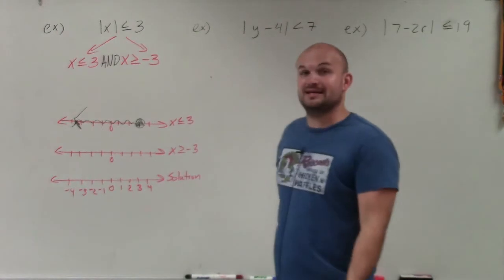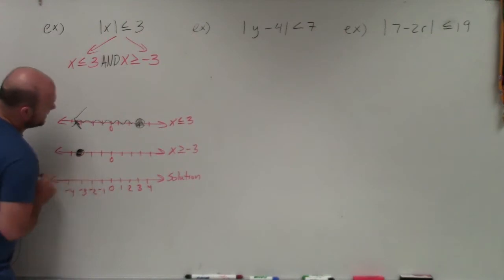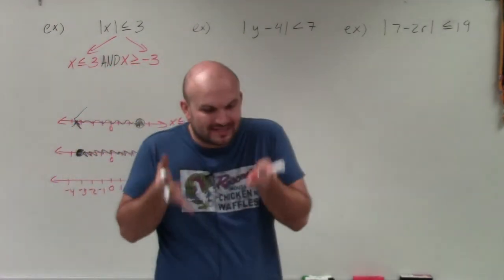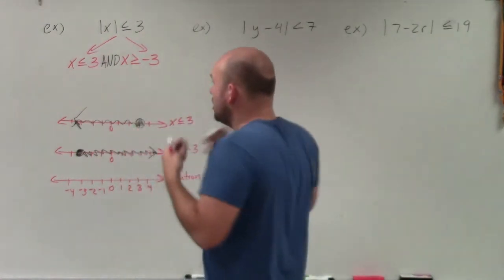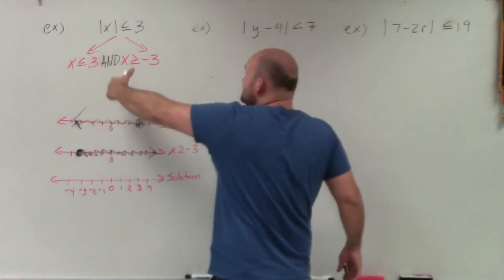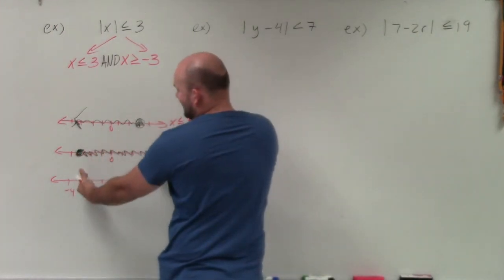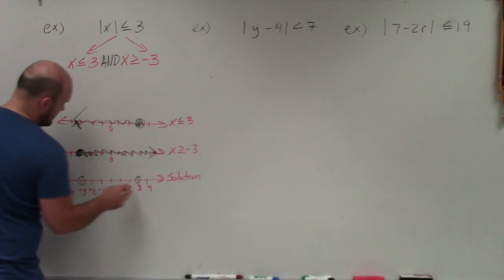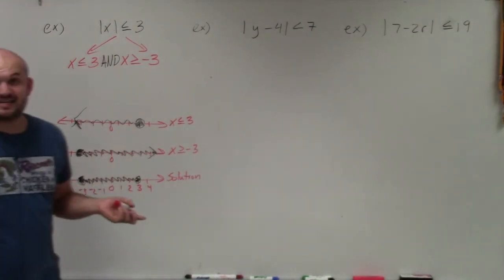Then I graph x is greater than or equal to negative 3. I go to negative 3, fill in a closed point since it's greater than or equal to, and all the values greater than or equal to negative 3 are the points to the right. For the solution, remember when dealing with conjunction 'and' we're asking for the intersection — what solutions are true for both x is less than or equal to 3 and x is greater than or equal to negative 3. That gives us both points, negative 3 and 3, and all the solutions in between them — two closed points with the shaded region between them.